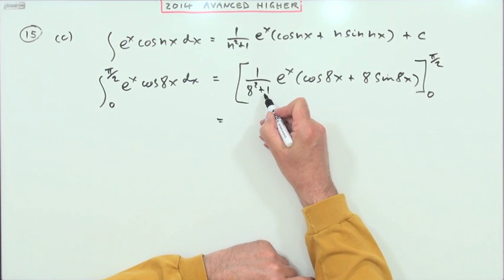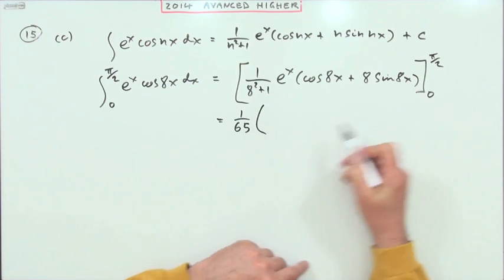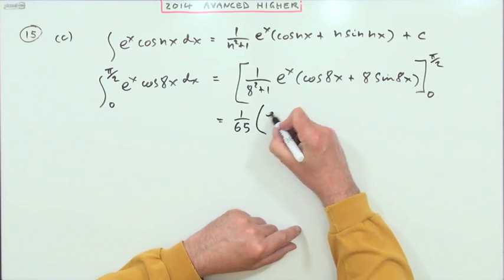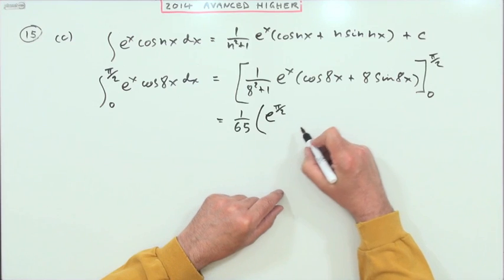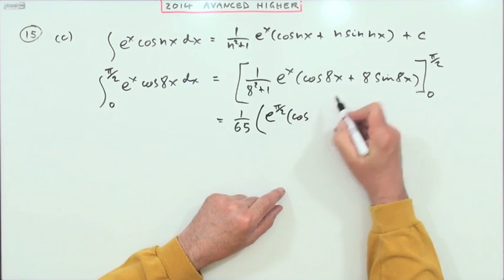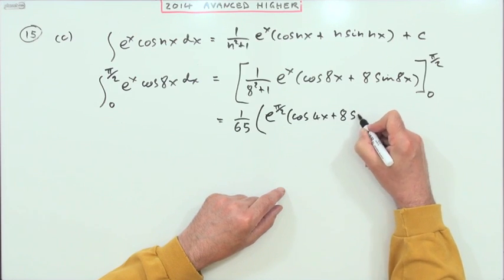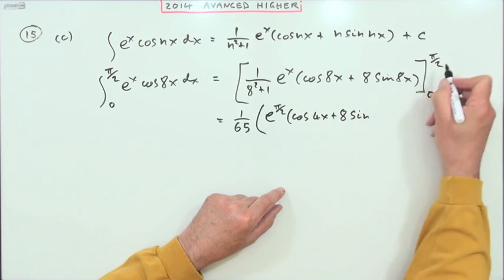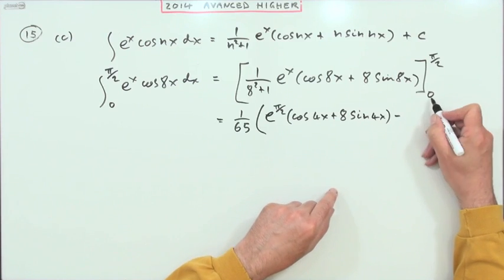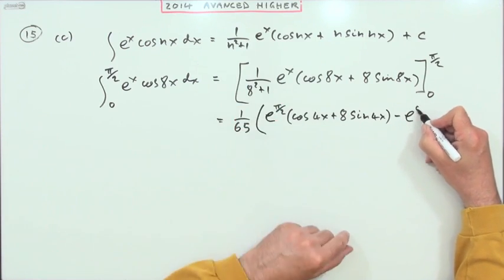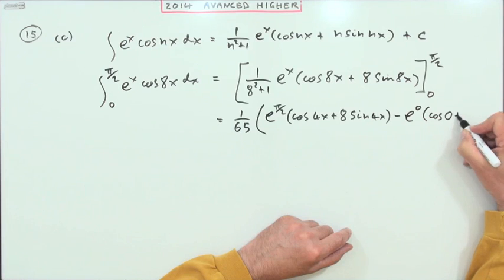So it's 1/65 times, now evaluated at π/2, so e^(π/2) times cos—and 8 halves are 4, so it's cos(4π) plus 8 sin—again, 8 times that will be 4π. Oh, we may have to start writing smaller. Evaluate it at 0: e^0 times, and that will be cos(0) plus 8 sin(0).